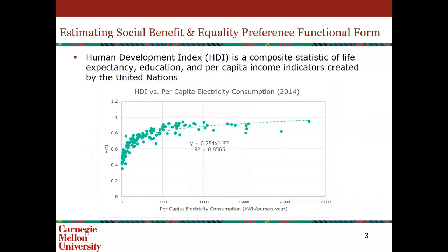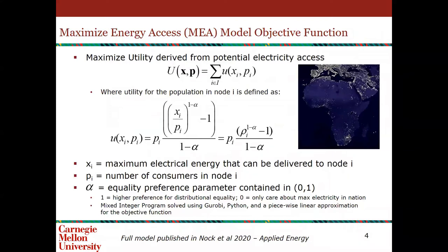When we're thinking about estimating social benefit and equality preferences, we use the Human Development Index, which is a composite statistic developed by the United Nations combining life expectancy, education, and per capita income indicators. Along the y-axis you see the Human Development Index, and along the x-axis you see per capita electricity consumption by country, with each data point representing a different country. If a stakeholder valued distributional equality highly, their preferences would take this logarithmic functional form — seeing high benefit for increasing electricity consumption when people have a low level, which then tapers off as electricity consumption grows.